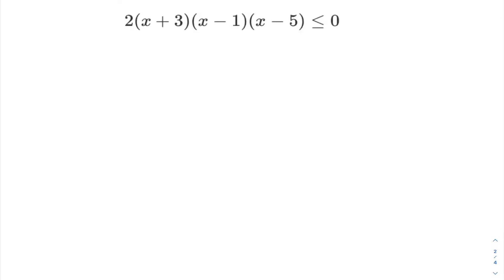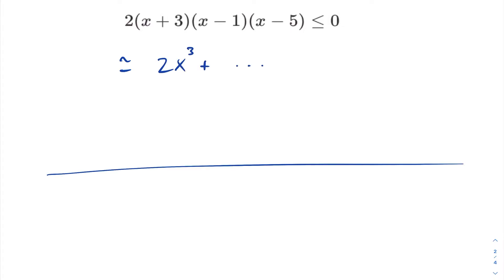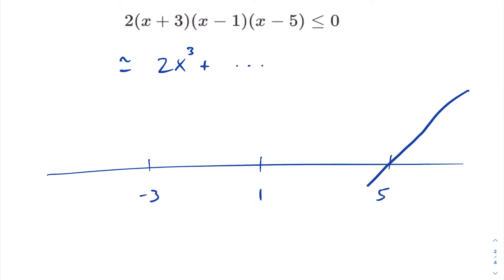Let's take a look at another example. The leading coefficient this time will be 2x cubed. Identifying our roots: we have a root at negative 3, a root at 1, and a root at 5. As x gets infinitely large, our polynomial will tend towards positive infinity. Because of the odd powers — these are all powers of 1 — we're going to be crossing every time we approach a root: cross at 5, cross at 1, and cross at negative 3.